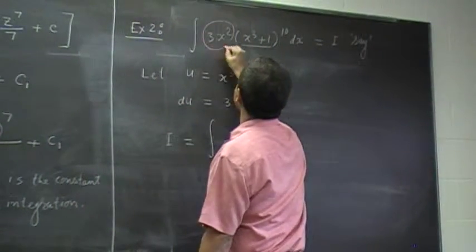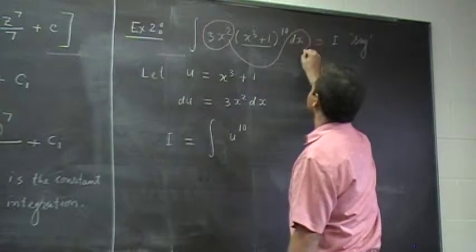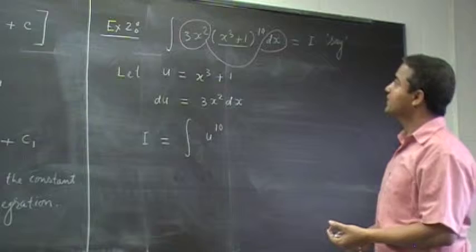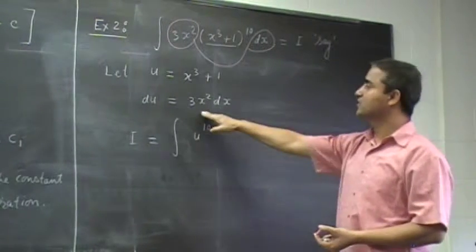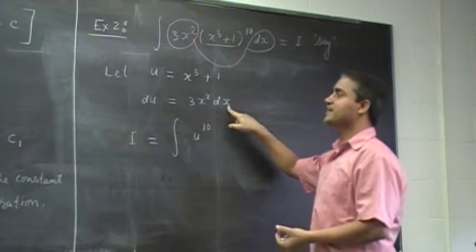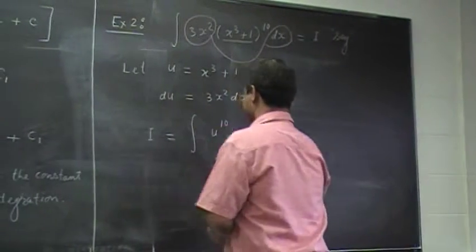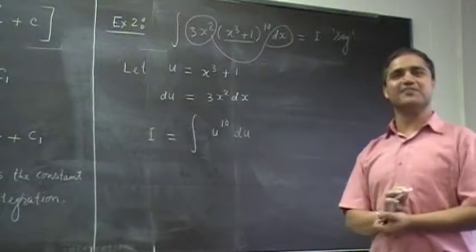The remaining part is this, right? 3x squared dx. Look here. 3x squared dx is nothing but du, right? Okay. Then, this is du, which is readily integrable.